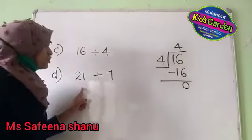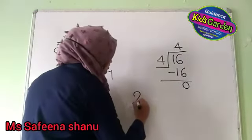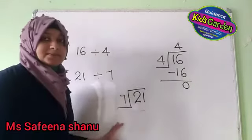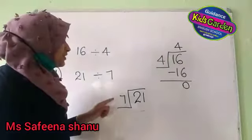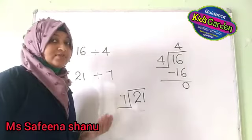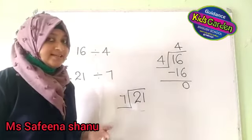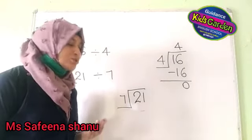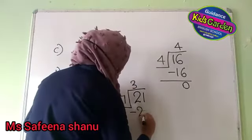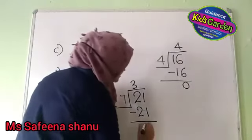Next: 21 divided by 7. Say the table of 7 till you reach 21: 1 seven is 7, 2 sevens are 14, 3 sevens are 21. 3 into 7 is equal to 21. 21 minus 21 is equal to 0.